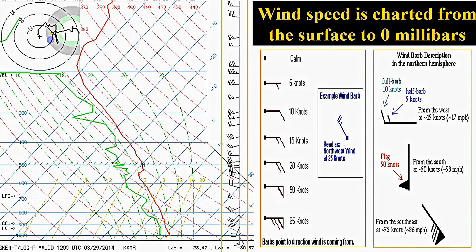On this last slide, we see the final component of a skew-t diagram: wind speed and wind direction. Wind speed is charted from the surface to 0 millibars, read in the same manner as we learned several chapters ago. A short stick is 5 knots, one long stick is 10 knots, and a combination of a short stick and a long stick is 15 knots, increasing as we go up.